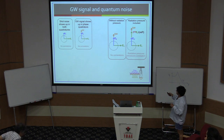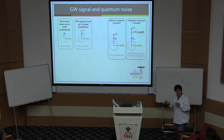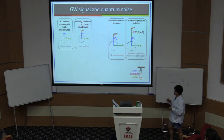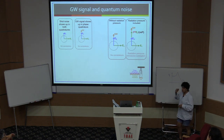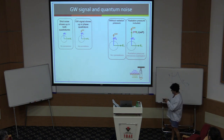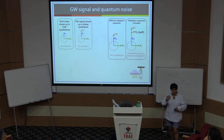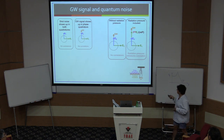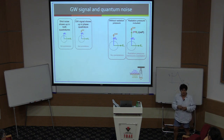Without radiation pressure, that's your picture. But if you had radiation pressure, something rather dramatic happens. What does radiation pressure do? It takes amplitude fluctuations — in this case due to shot noise — and those amplitude fluctuations apply a force on the mirror. The mirror moves, changing the phase of the light. So radiation pressure takes an amplitude fluctuation and puts it into a phase fluctuation because of the motion of the mirror. That correlates the amplitude and phase.